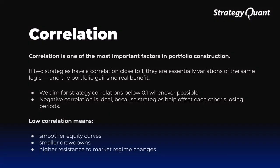Correlation is one of the most important factors in portfolio construction. If two strategies correlate closely, they are essentially variations of the same logic and the portfolio gains no real benefit. We aim for strategy correlations below 0.1 whenever possible. Negative correlation is ideal because strategies help offset each other's losing periods, resulting in smoother equity curves, smaller drawdowns and high resistance to market regime changes. Now I will switch to StrategyQuant to show you how to calculate correlation in a few simple steps.